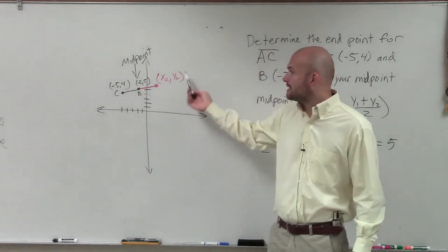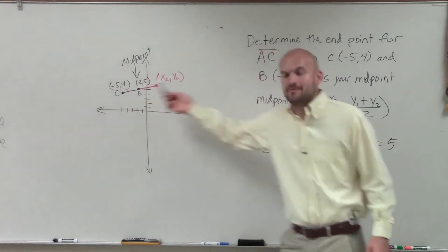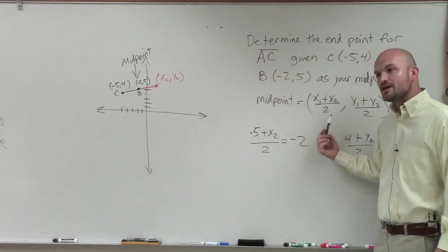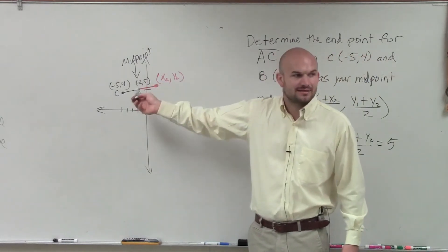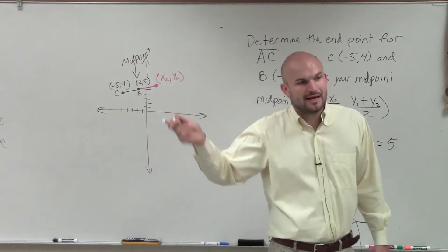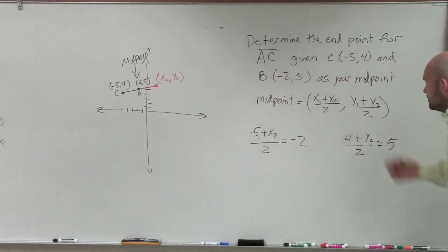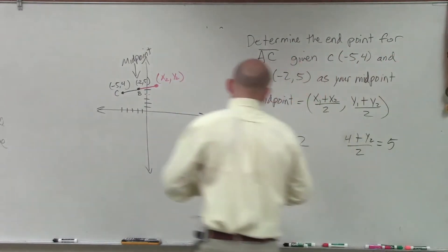Because remember, to find the midpoint, you take your endpoint plus your endpoint, divide them by 2 for each coordinate. And that's how you find the midpoint. But in this case, I'm only giving you the midpoint and one endpoint. So we need to find the other endpoint. So therefore, now let's just go and solve.